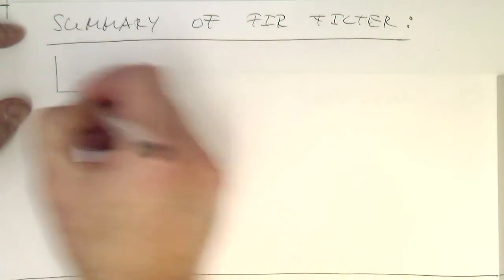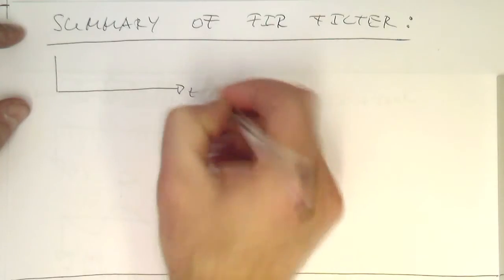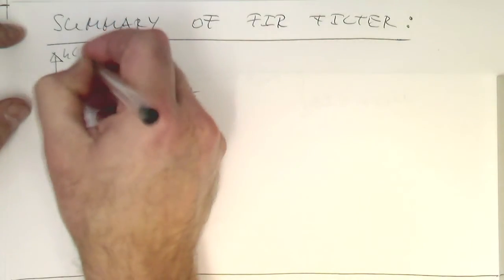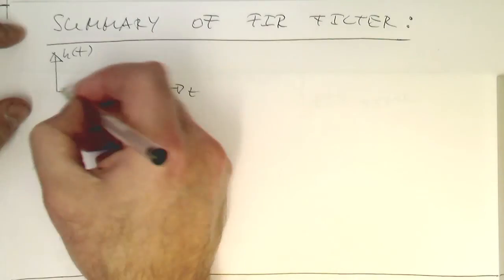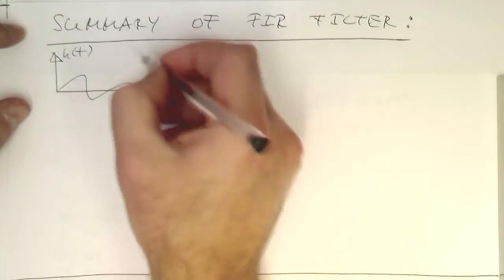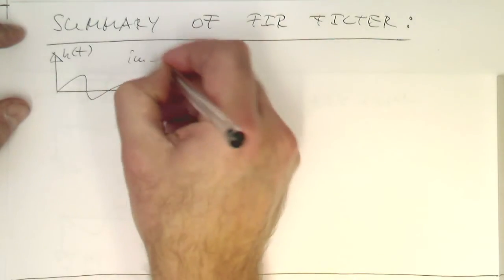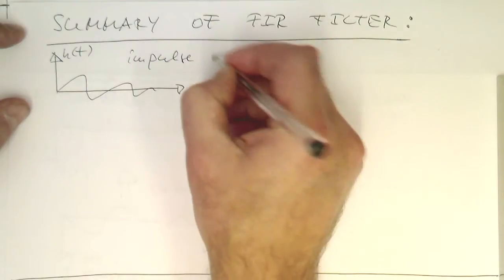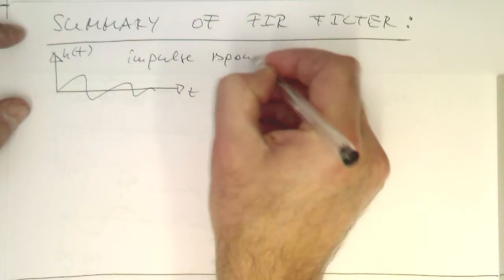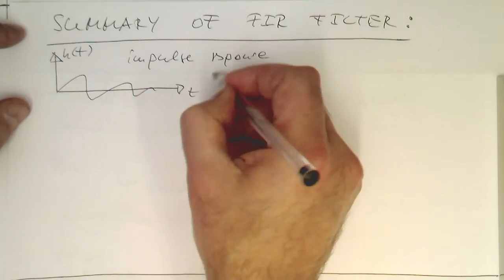Let's start with an impulse response in the time domain, the continuous time domain. H is like this. That's our impulse response of a filter.